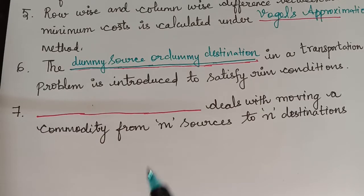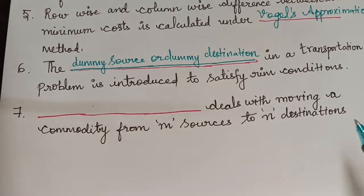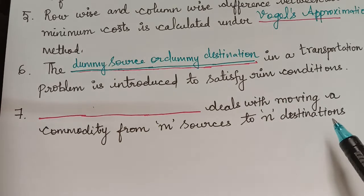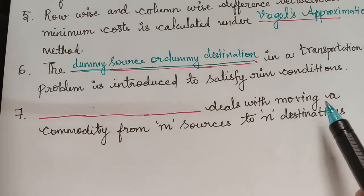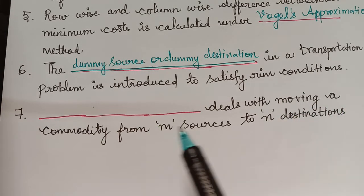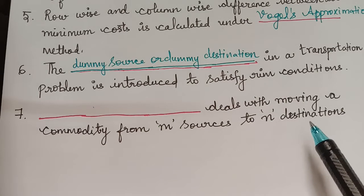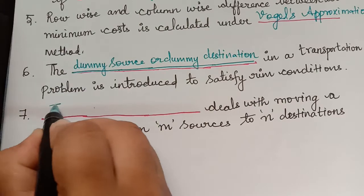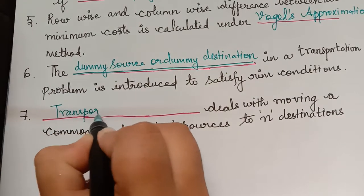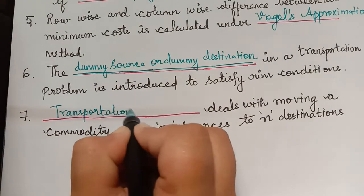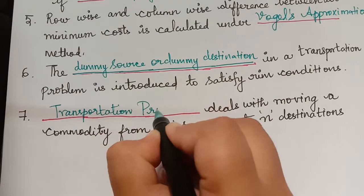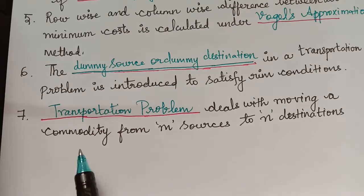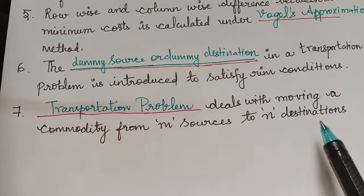The next question is: dash deals with moving a commodity from m sources to n destinations. Whenever we want to transport goods from m sources to n destinations, we deal with a transportation problem. So the answer is transportation problem.